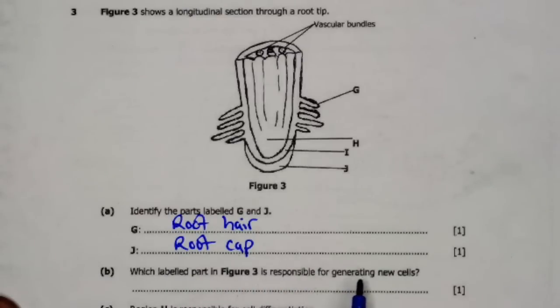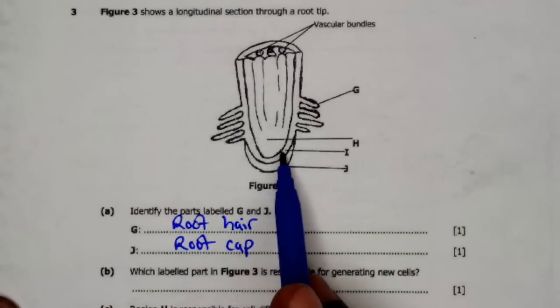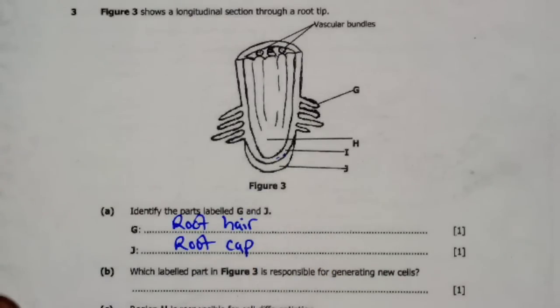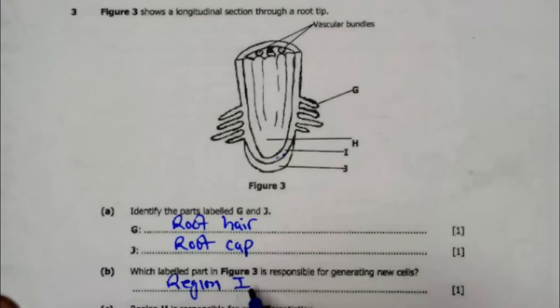Part B: Which labeled part in figure 3 is responsible for generating new cells? New cells are generated in region I, where we have the meristematic tissue.